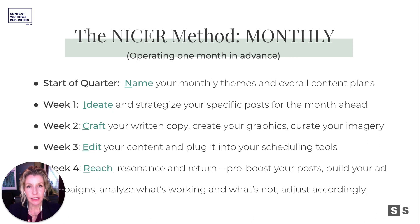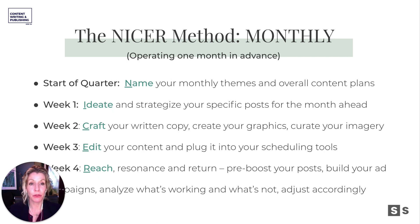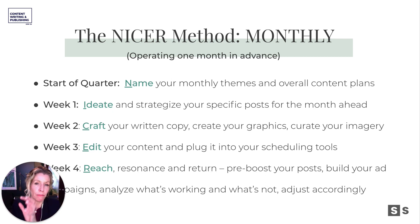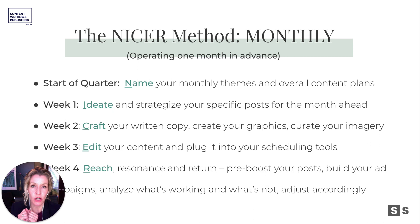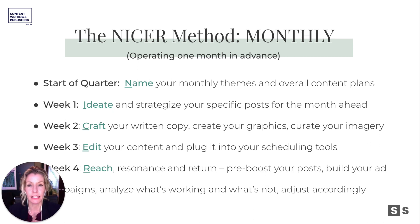What this looks like is that at the start of the quarter — which is exactly what you're doing today — we're naming our monthly themes and our content plans, coming up with those keystone topic ideas. Plus we've already declared our pillars, our categories, and our frequency. So all of those bigger plans for the next at least 90 days are set, and I've got 12 weekly topics ahead of me that I know I can jump off of when I get to the I, C, E, and R.